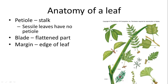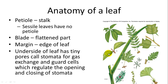The different parts of the leaf include the petiole, which is like the stalk of the leaf. Some leaves do not have a petiole at all — those are called sessile leaves. You have the blade, which is the flattened part, and then the margin, or outside edge. Margins can be serrated or lobed, and these features are used to characterize different plants. The underside of the leaf has tiny pores called stomata for gas exchange, and guard cells regulate the opening and closing of the stomata, also allowing water to escape during evaporation.